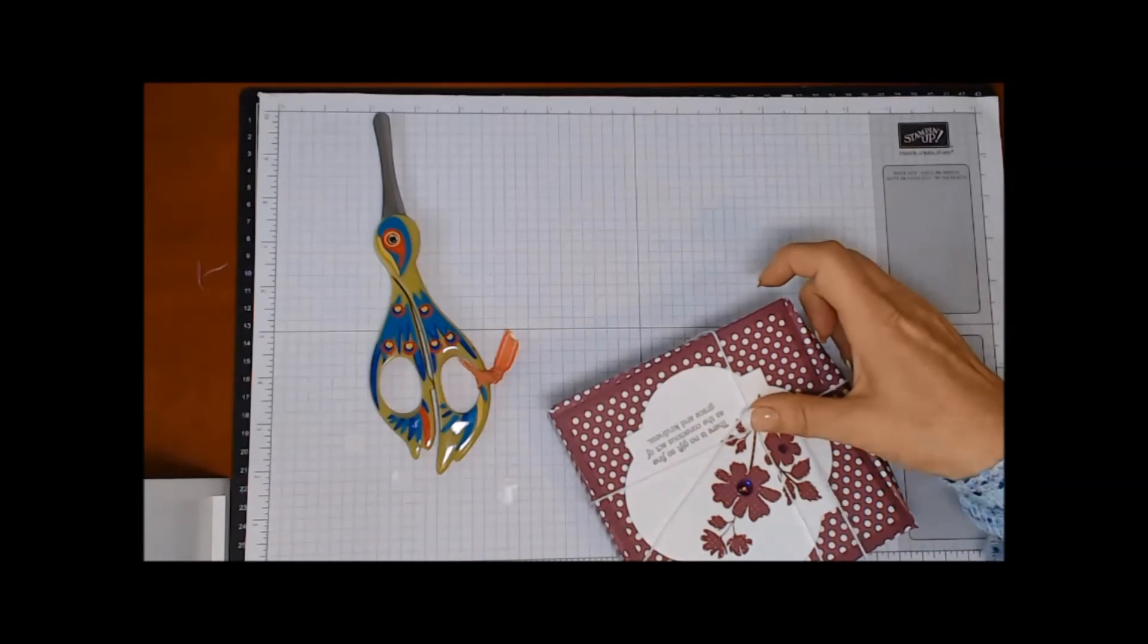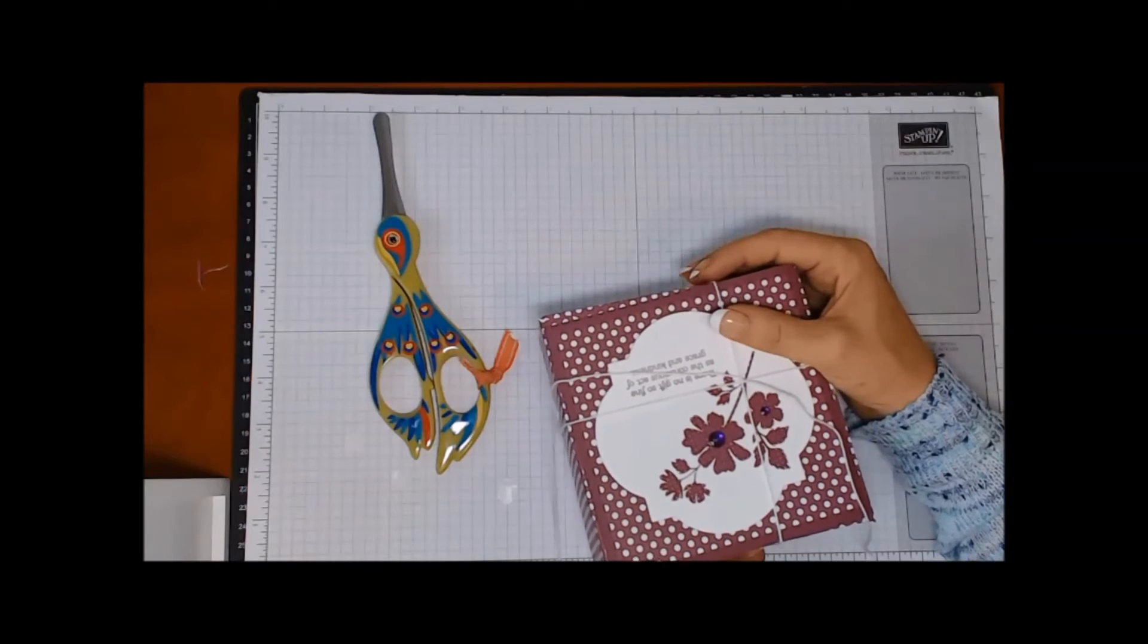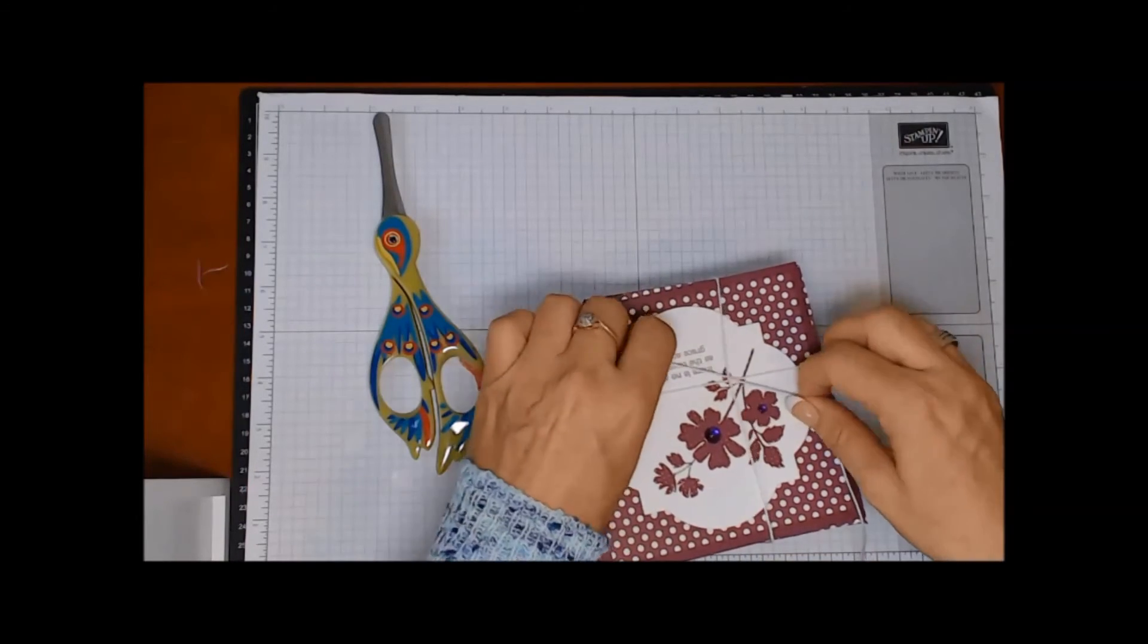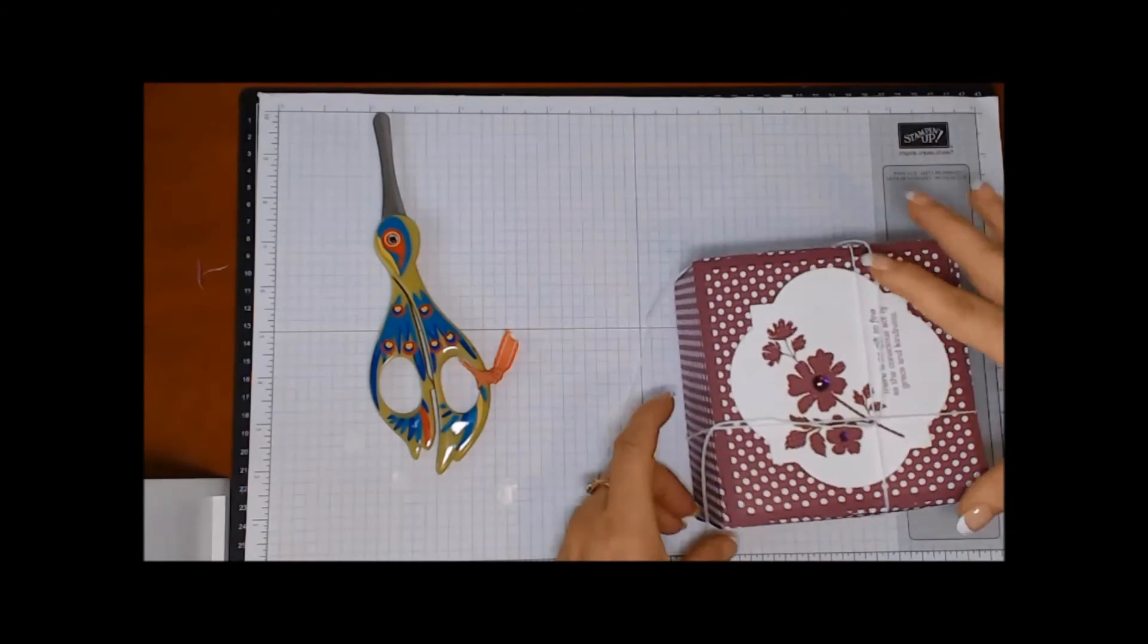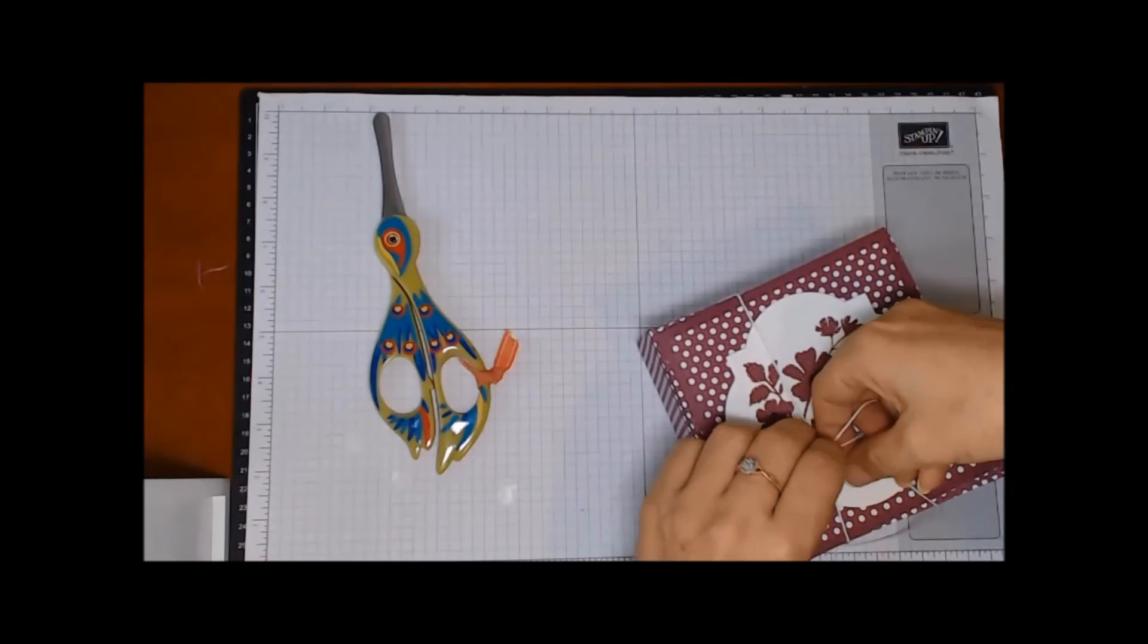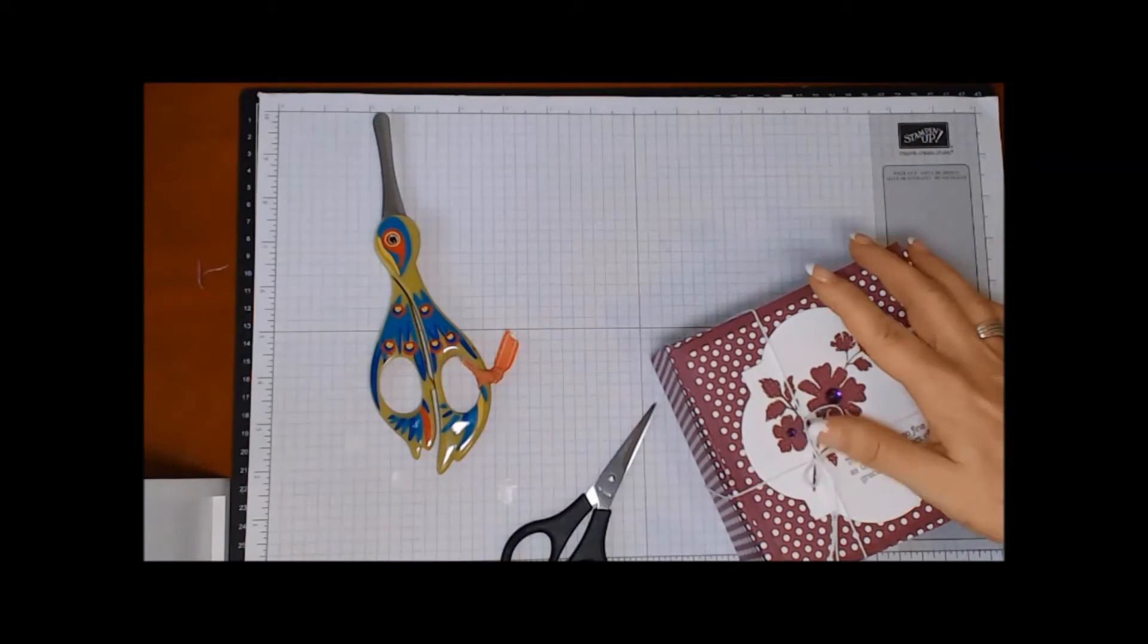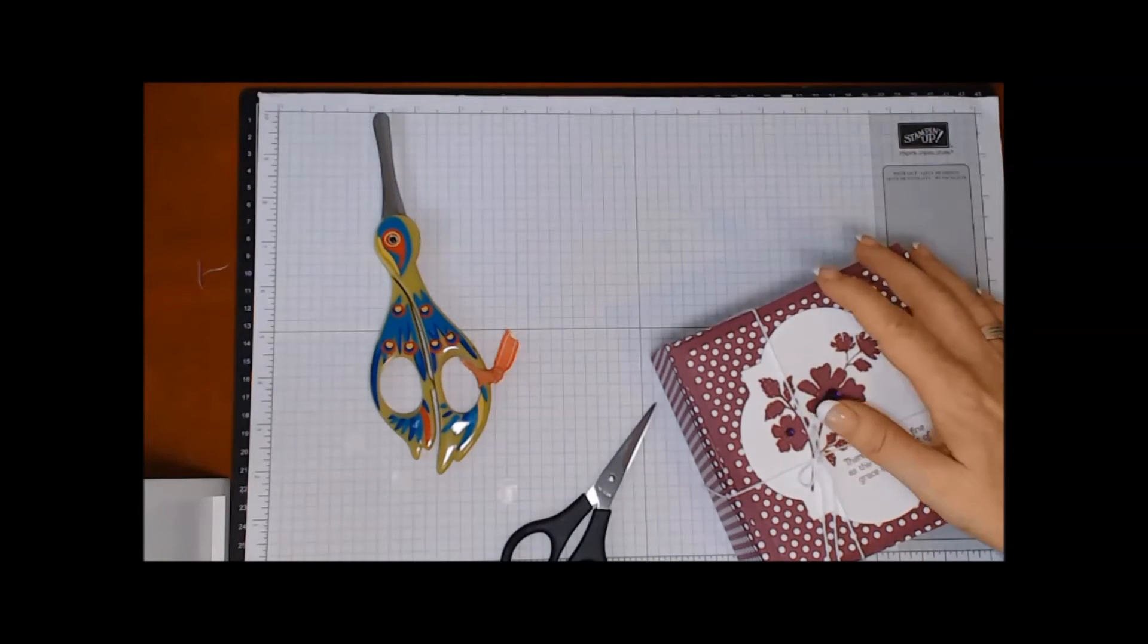Then once it was in a double knot, I tied a double bow. And you'll find that whoever's opening this will just be able to slip this baker's twine off so they don't need to untie to get it off the box. Now I'm just going to tie a bow. And then when the bow's tied, I'm just going to pull the loops in so that they're much smaller.